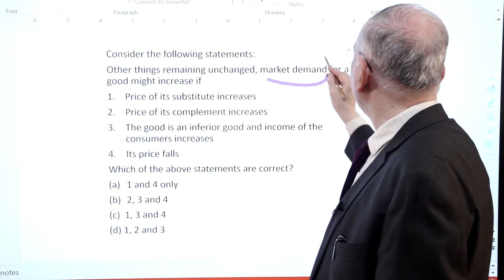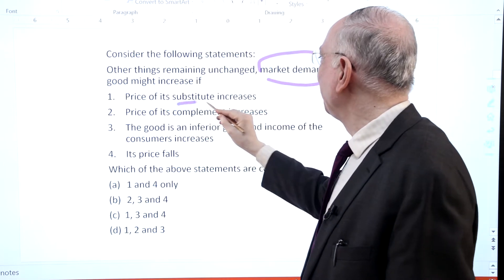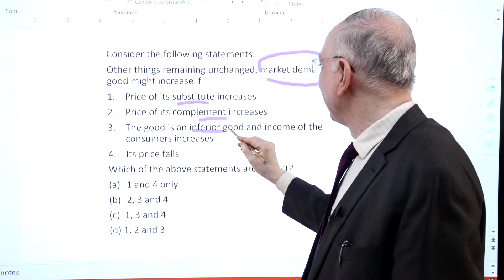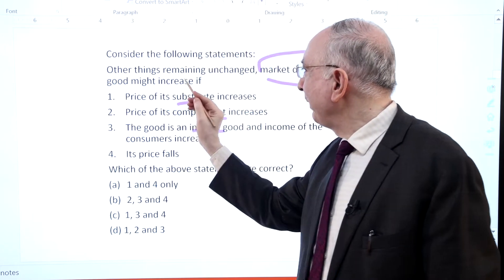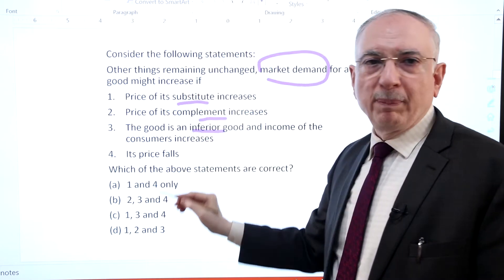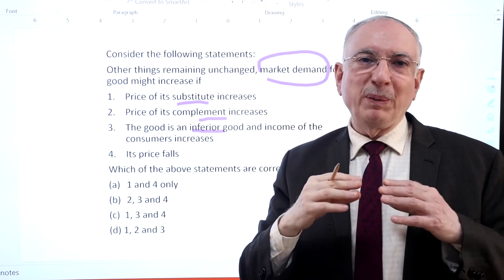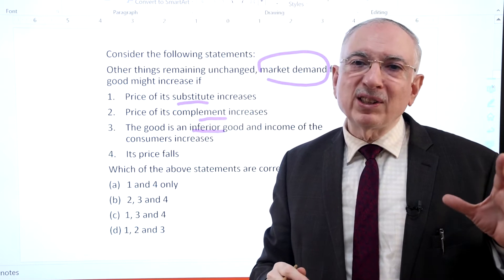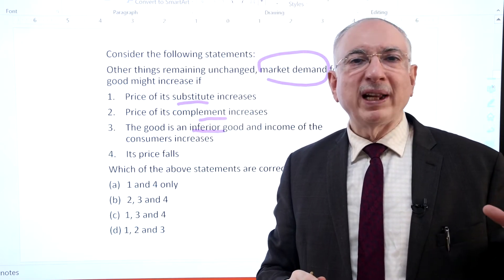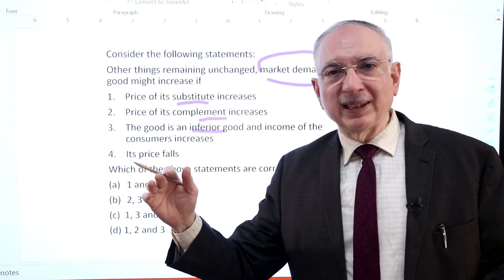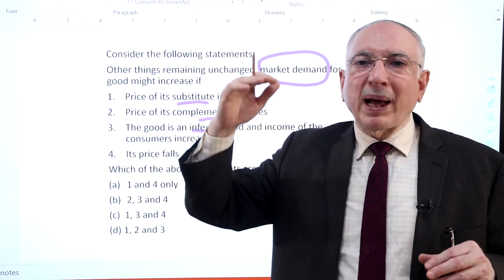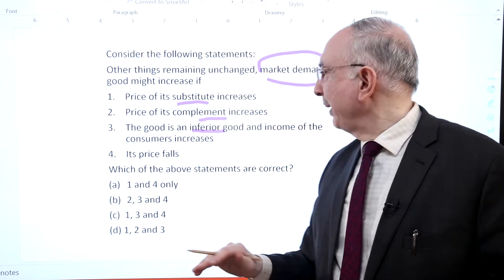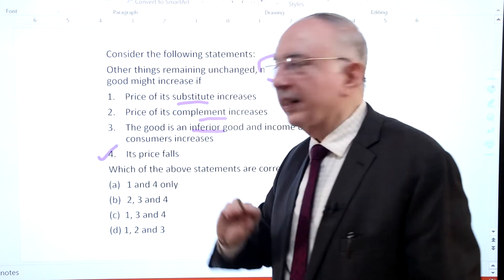This question relates to market demand, substitutes, complement goods, inferior goods, and the relationship between demand and price. The law of demand states that, other things being equal, there is an inverse relationship between demand for a commodity and its price — when the price of a commodity decreases, demand for it increases. Hence statement 4 is straightforwardly correct.